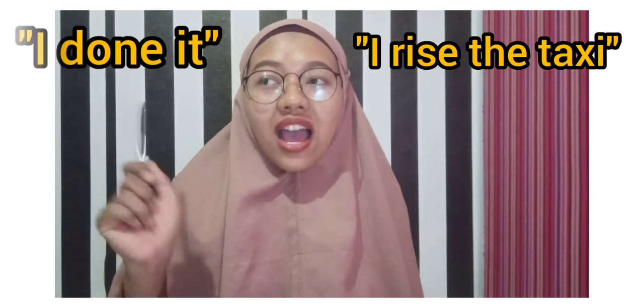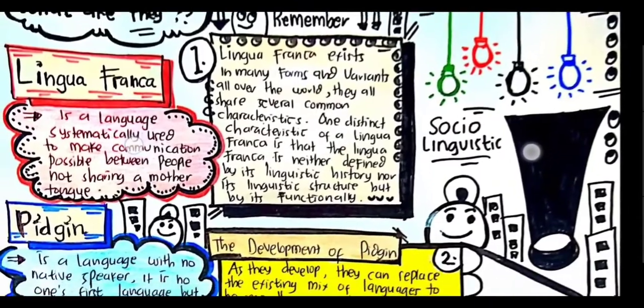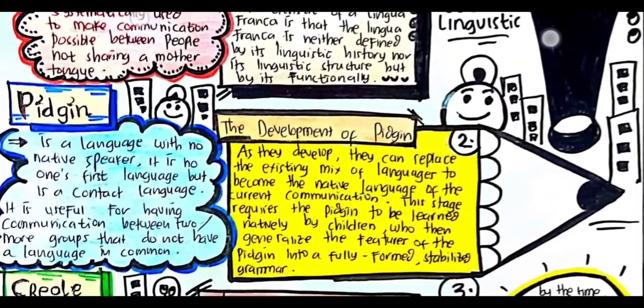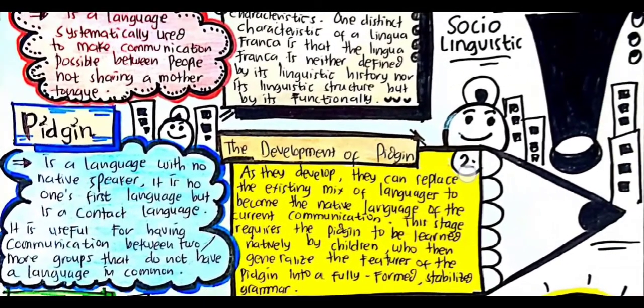For instance, when you are going to England and you don't have enough ability to speak English, you will use a simple syntactic structure and vocabulary. As pidgins develop, they can replace the existing mix of languages to become the native language of the current communication. This requires the pidgin to be learned natively by children, who then generalize the features of the pidgin into a fully-formed, stabilized grammar.